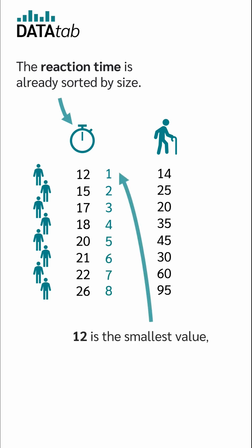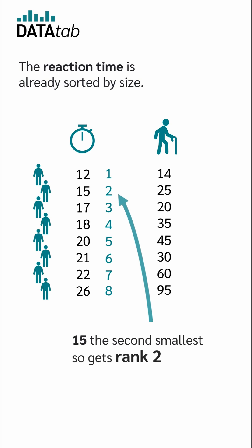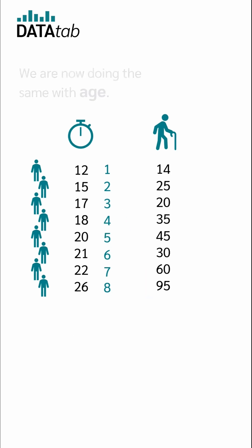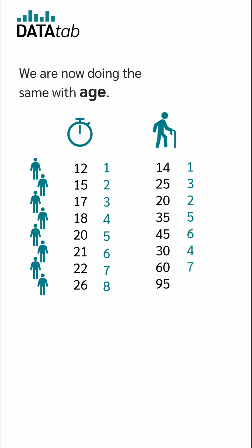Their reaction time is already sorted by size. 12 is the smallest value, so gets rank 1, 15 the second smallest, so gets rank 2, and so on and so forth. We are now doing the same with age. Here we have the smallest value, there the second smallest value, the third smallest value, fourth smallest, and so on and so forth.